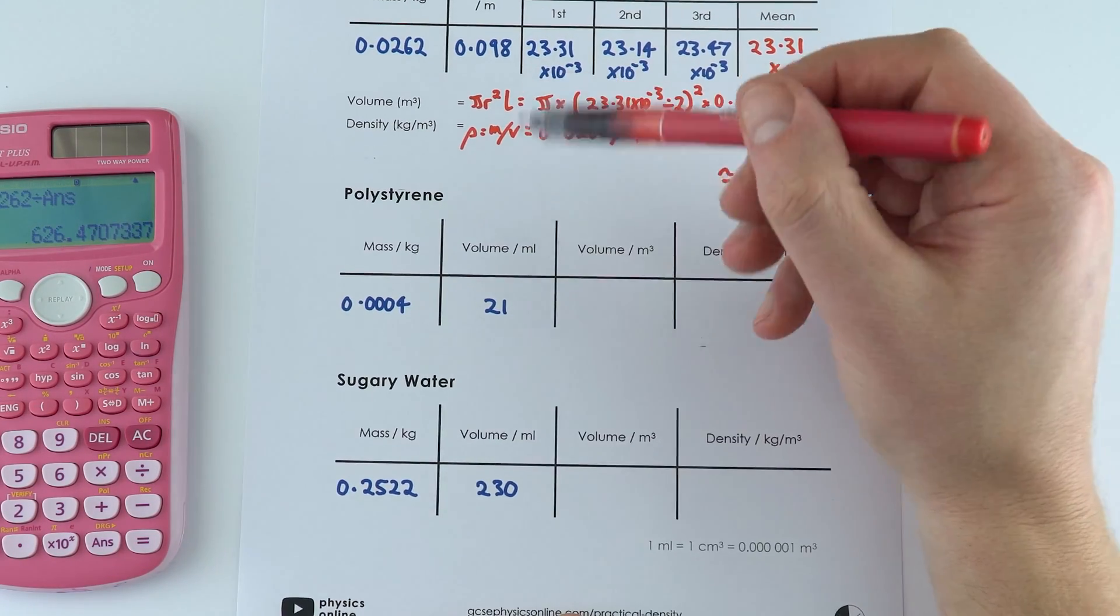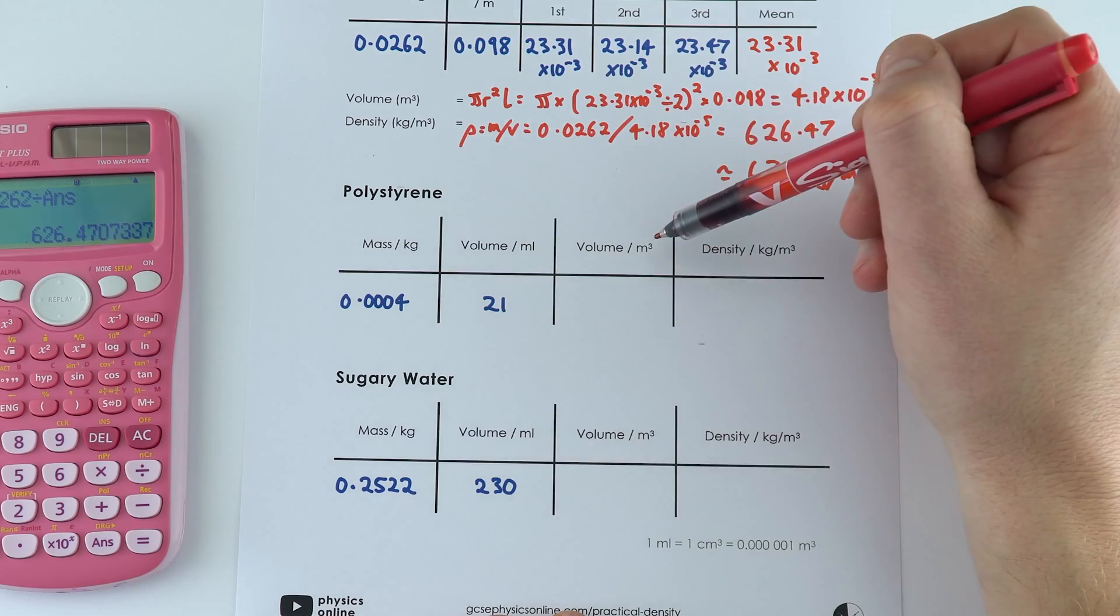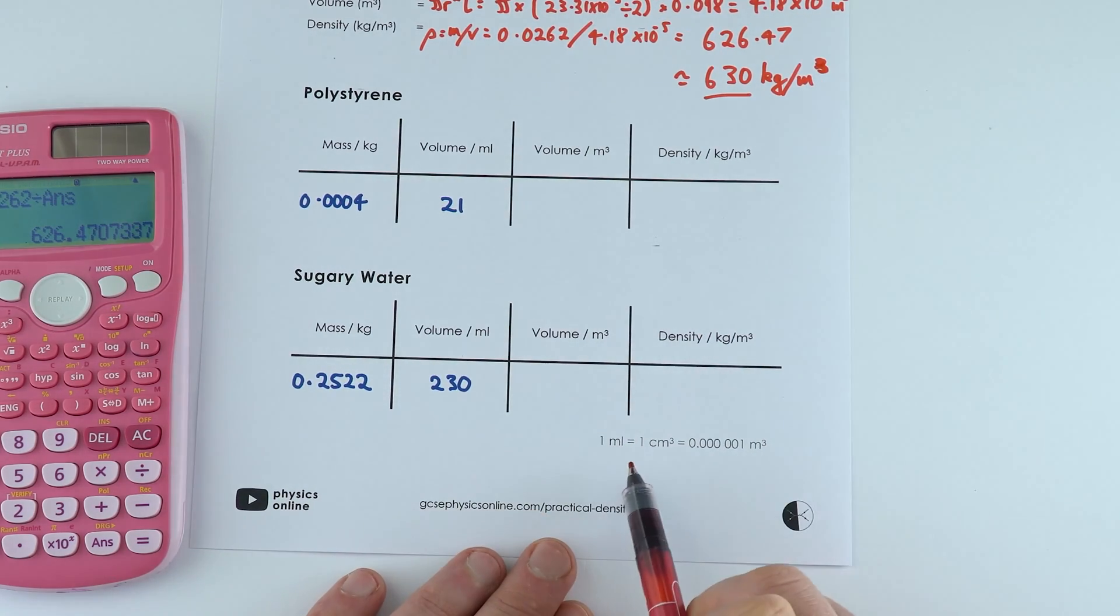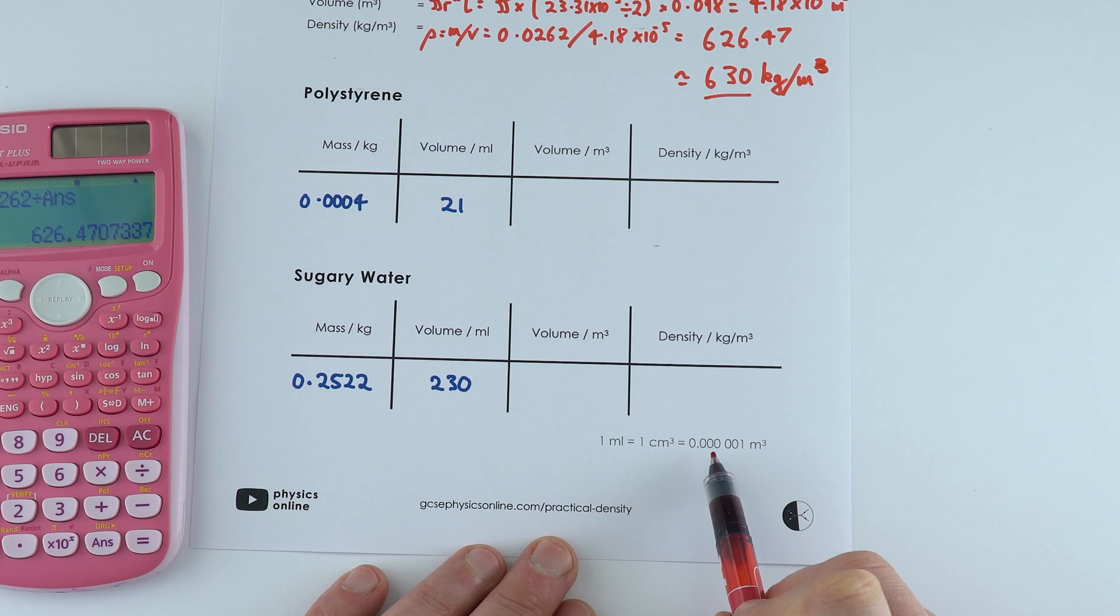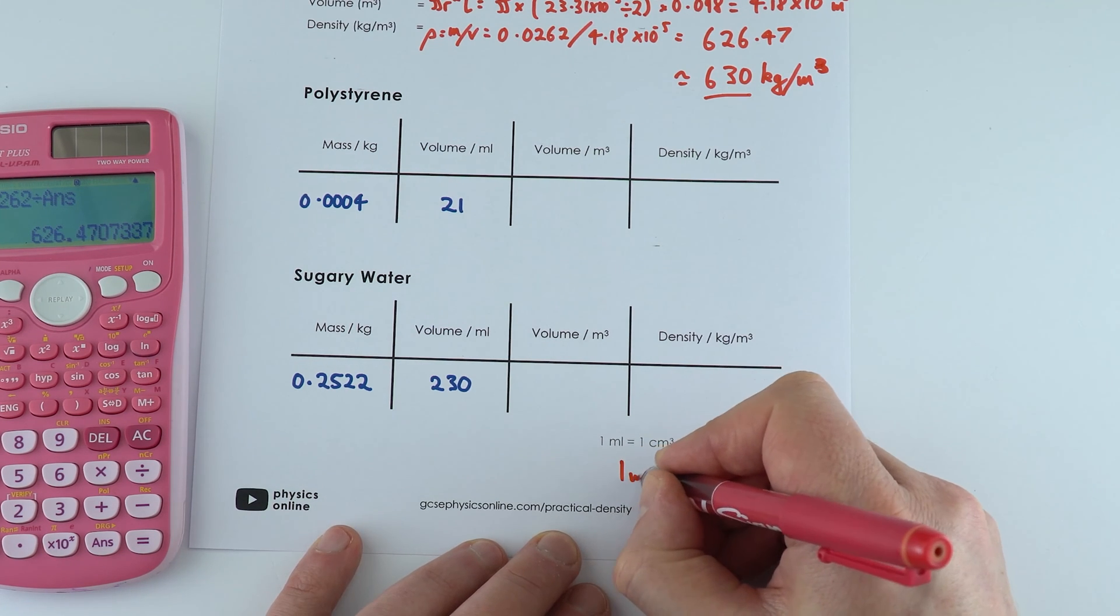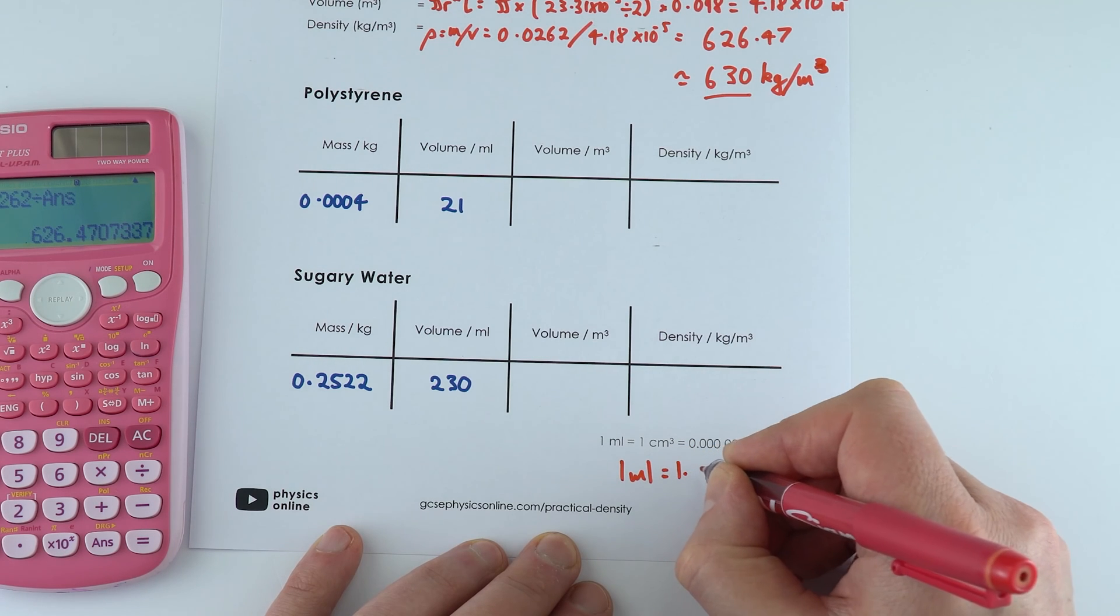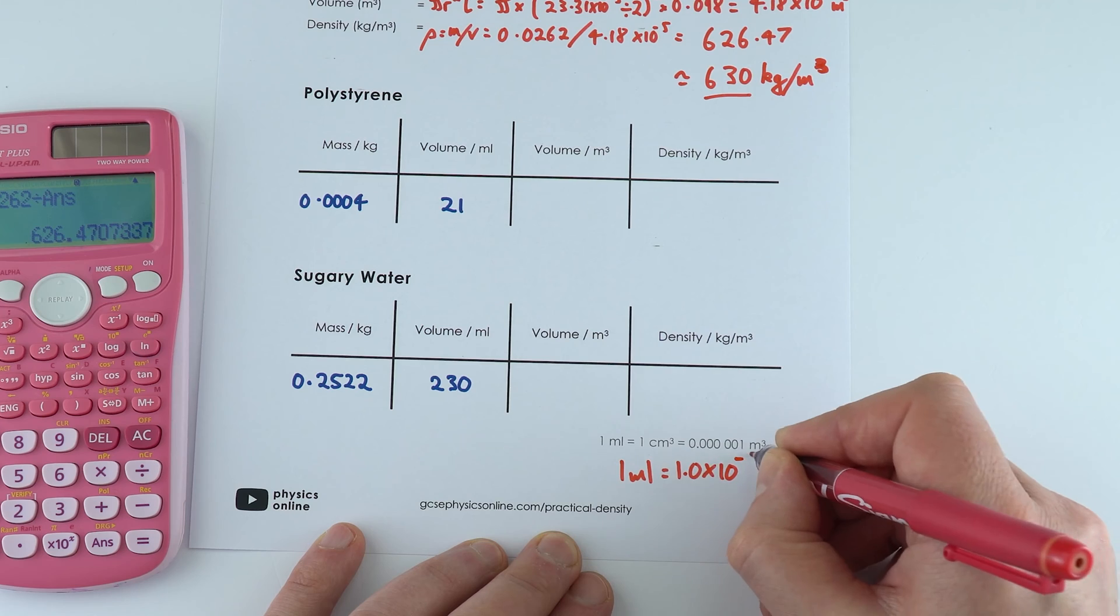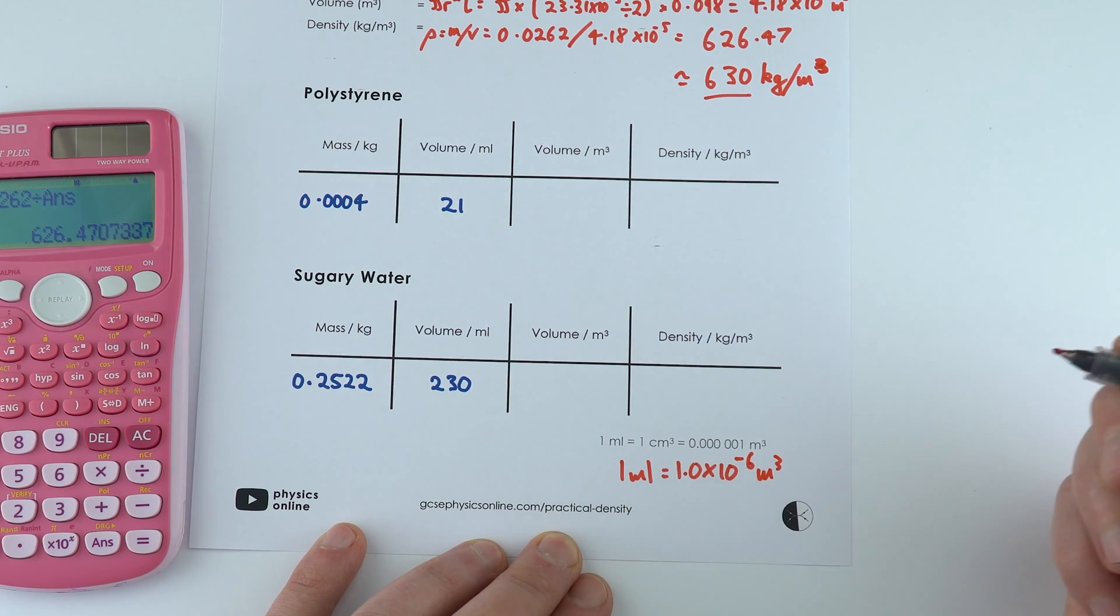Now it says down here that 1 milliliter is 1 centimeter cubed which is 0.00001 meters cubed, which is also the same as saying 1.0 times 10 to the minus 6 cubic meters.